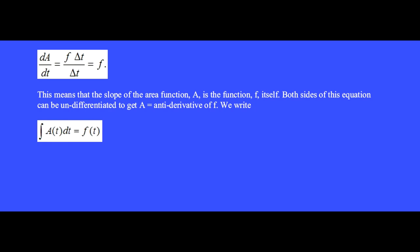This means that the slope of the area function A is the function f itself. Both sides of this equation can be undifferentiated to get A equals antiderivative of f.